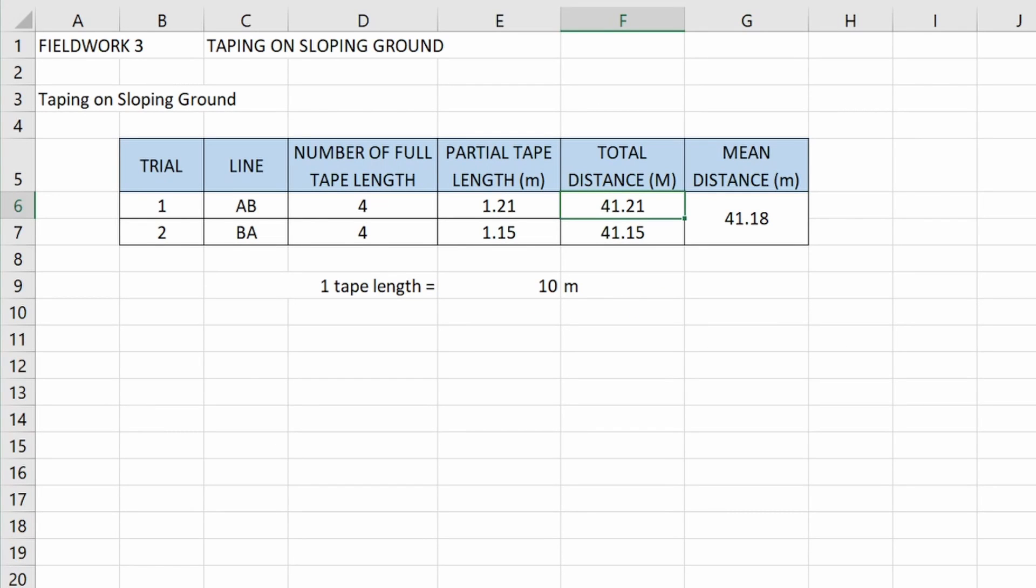For our example, we have trial 1 for line AB. That's up the slope. So full tape length is 4. Partial is 1.21. And then computing for total distance is 41.21.